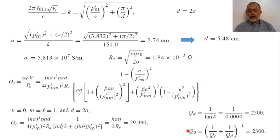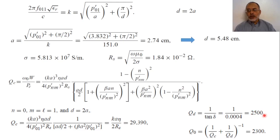The total unloaded quality factor is given by 1/Q = 1/Qc + 1/Qd. Substituting the values for the conductor and dielectric quality factors, we obtain a total quality factor of approximately 2,300. It can be noted that the total quality factor is mainly dominated by the dielectric quality factor, since it is much smaller than the quality factor due to conductor loss.